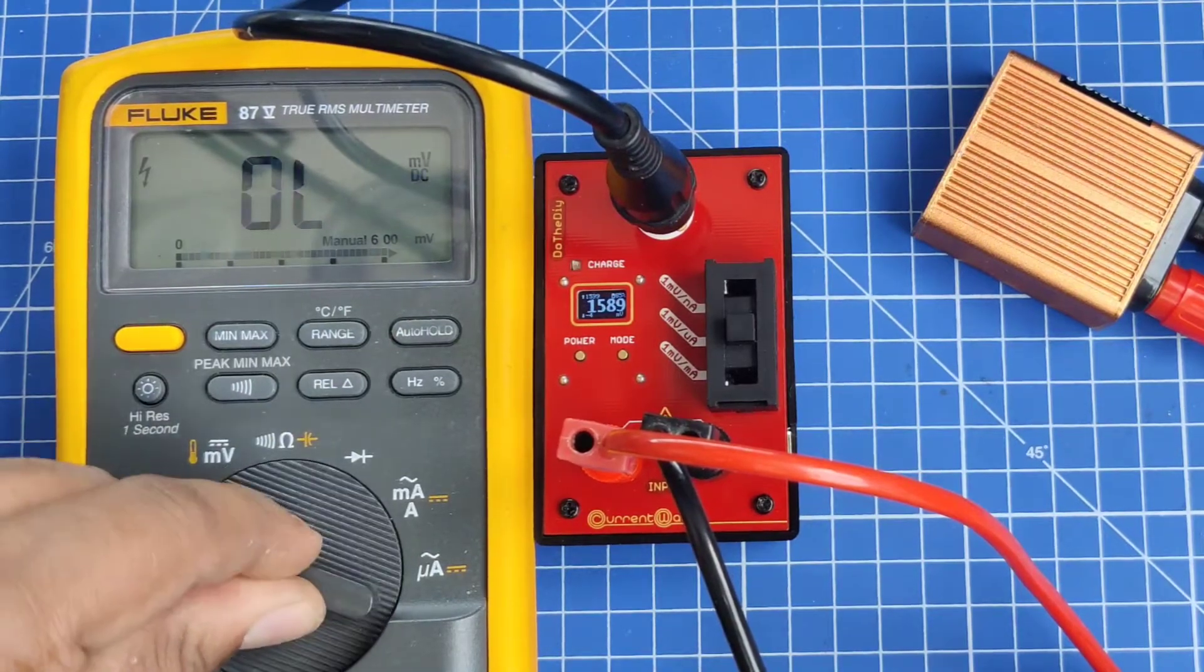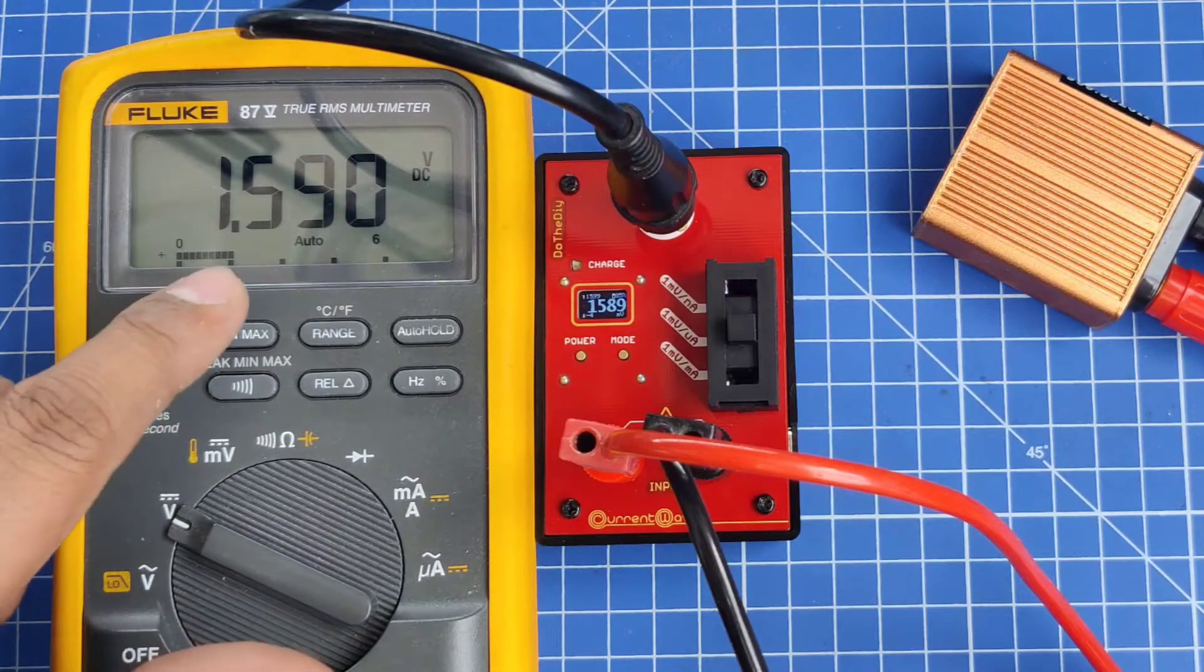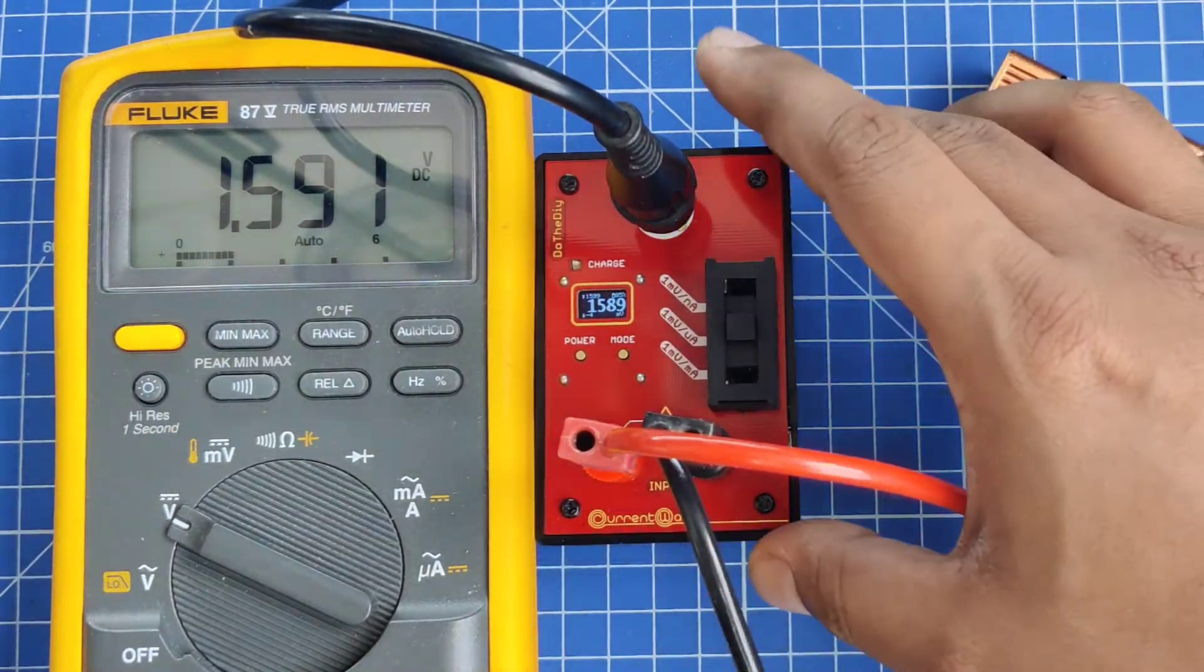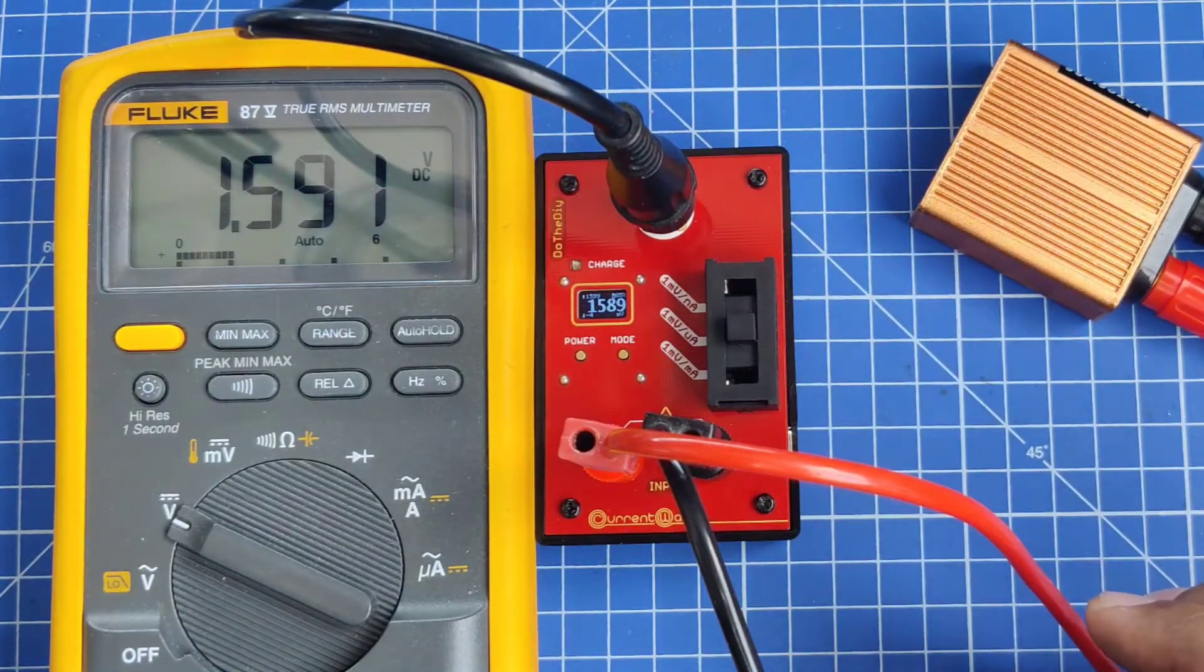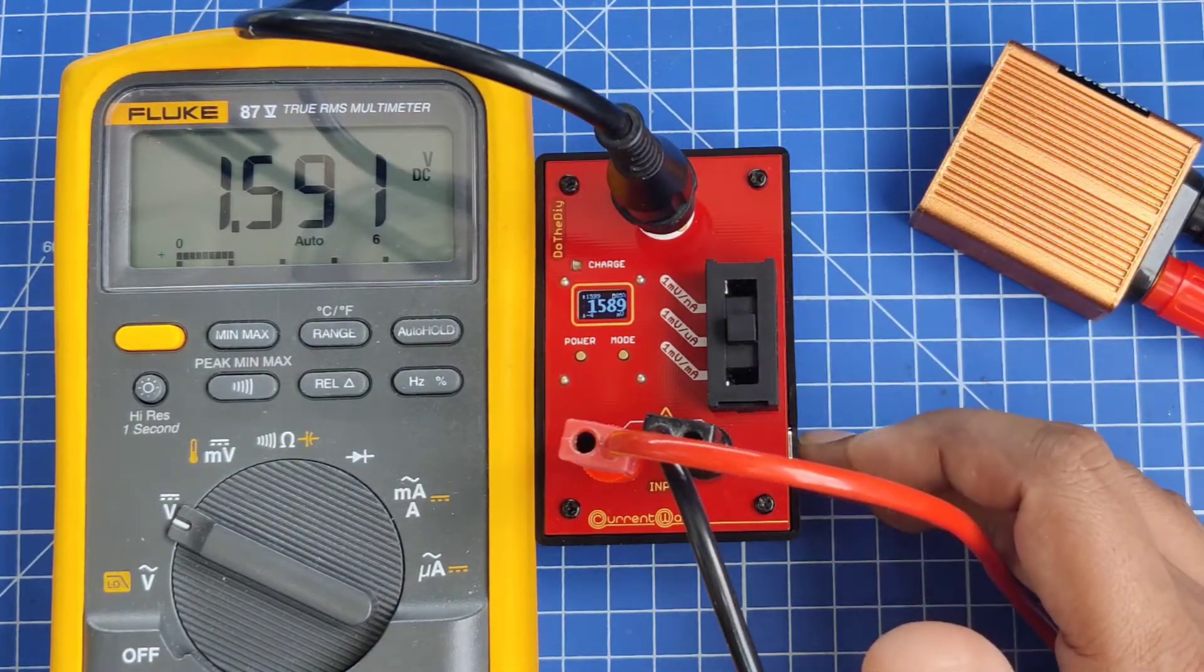You can see the multimeter is still not showing because it can only read till 600 millivolts. If we come to the volt reading, it will start showing. Currently the current consumption is 1.5 milliamps, and both readings are pretty close now.